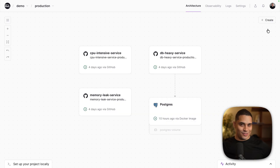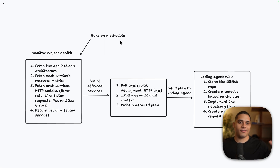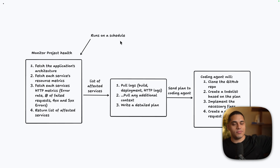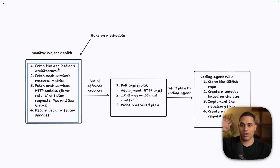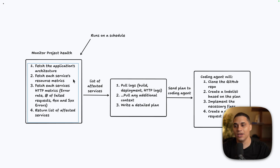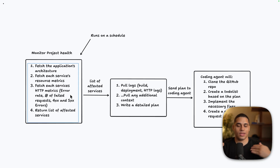Today I'm going to show you a demo that paints a picture of how this could be achieved. At a high level, I want a series of workflows — the first runs on a schedule, every 10, 15, or 30 minutes. It will fetch the application's architecture — understanding which services are deployed, front ends, back ends, crons, queues — then fetch each service's resource metrics like CPU and memory utilization, and each service's HTTP metrics including request error rate and failed requests for 500 and 400 errors.